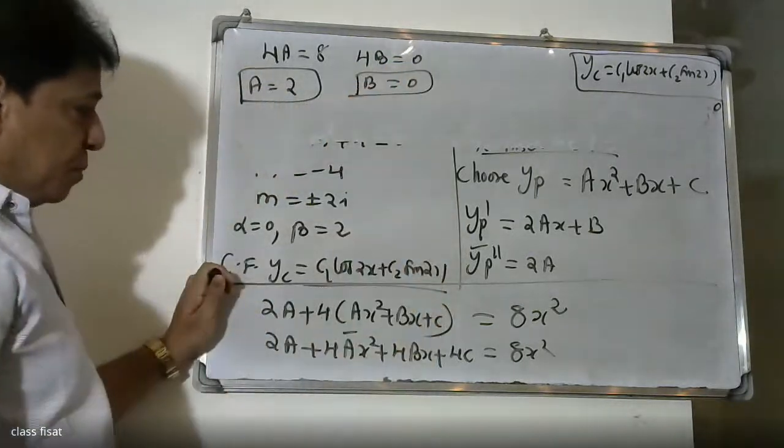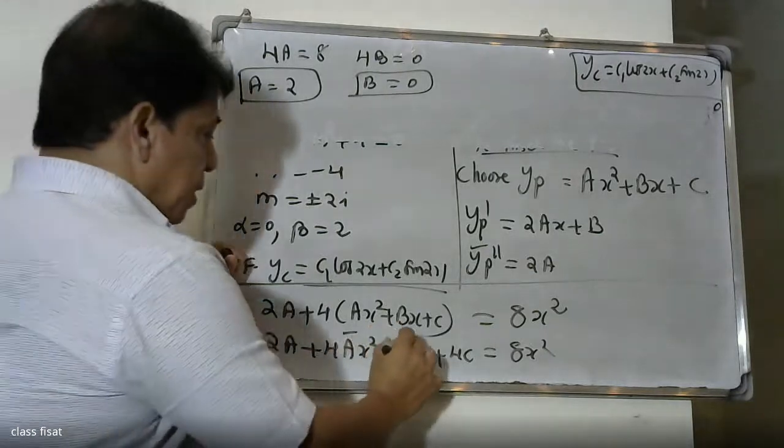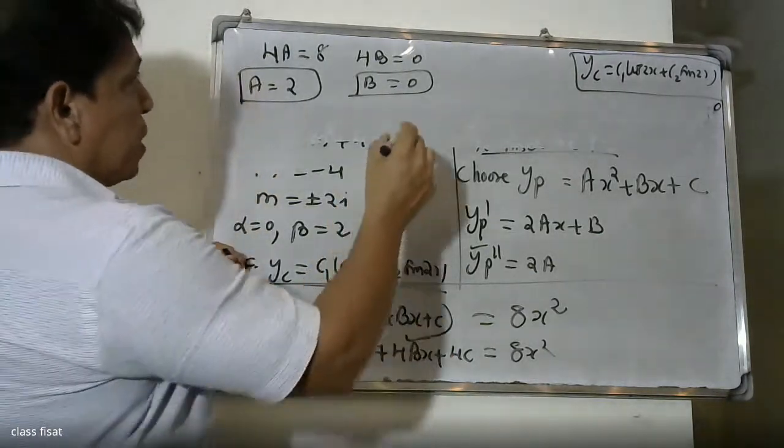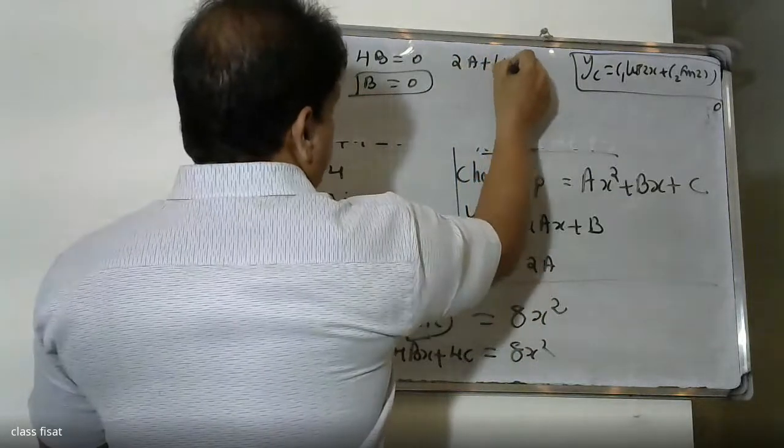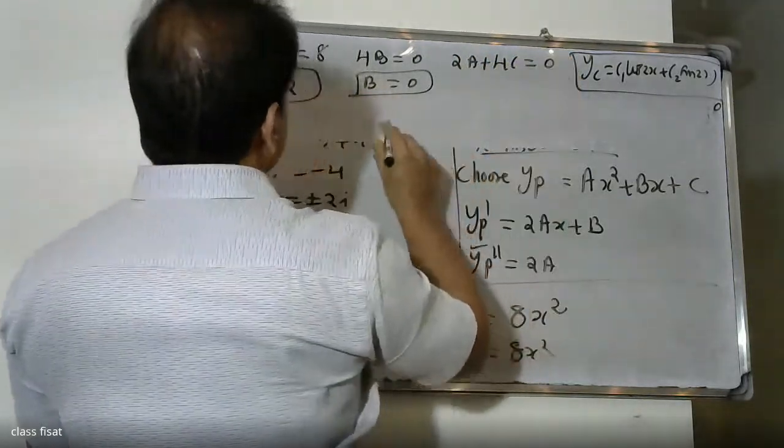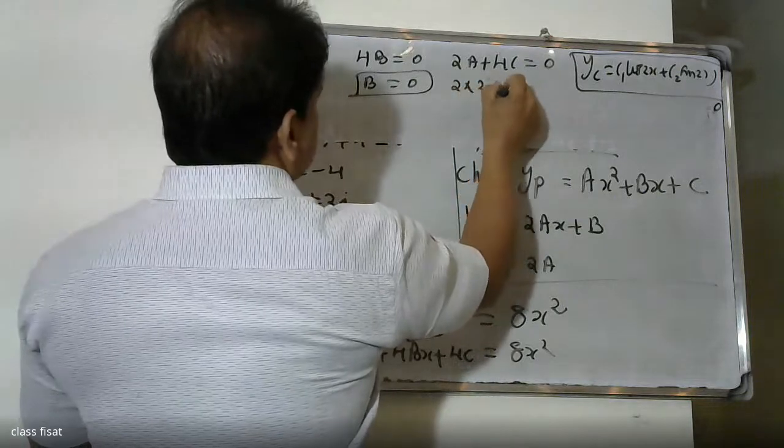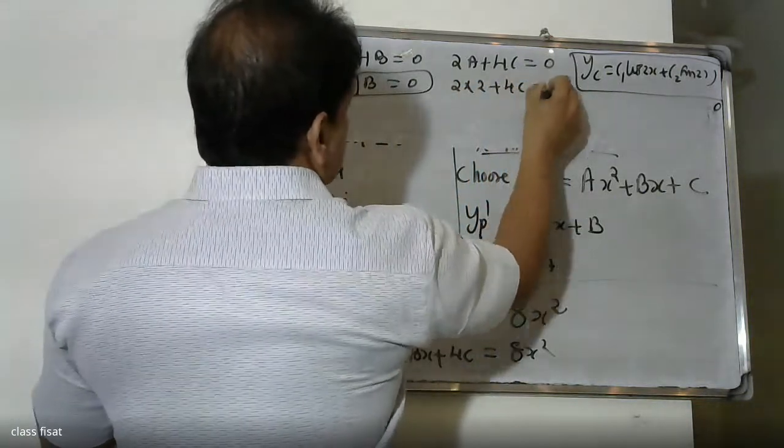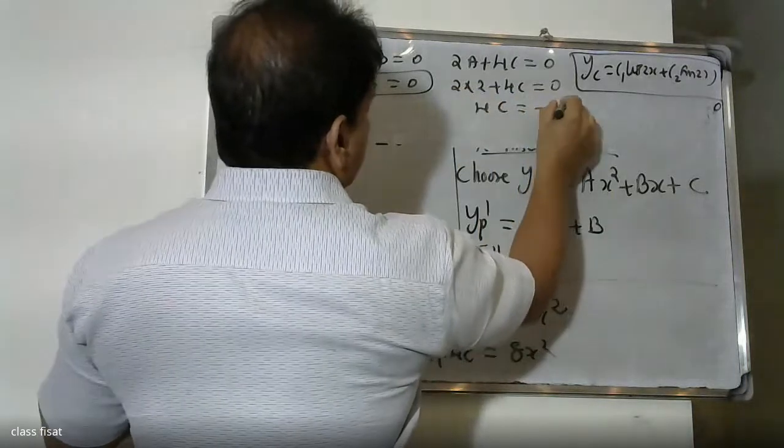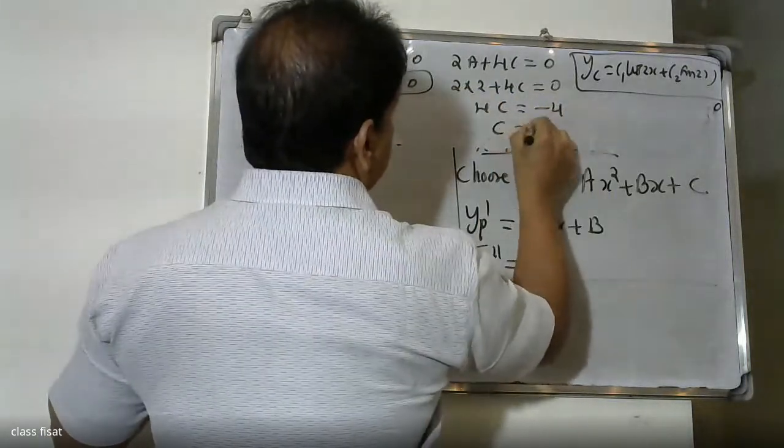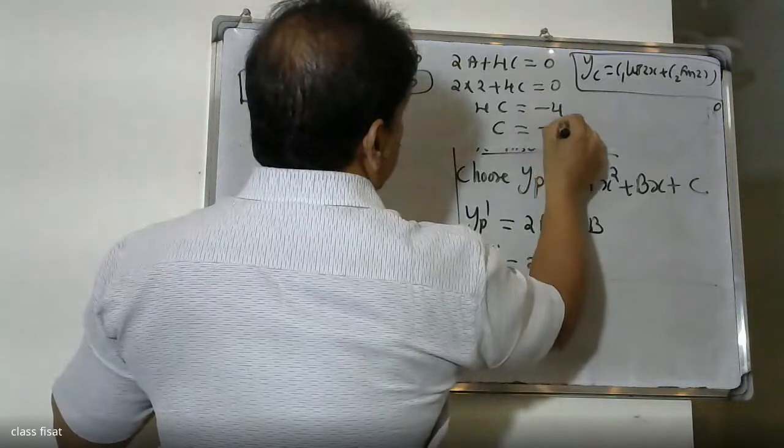For the constant term: 2A + 4C = 0. Substituting A = 2: 2(2) + 4C = 0, so 4 + 4C = 0, giving 4C = -4, therefore C = -1.